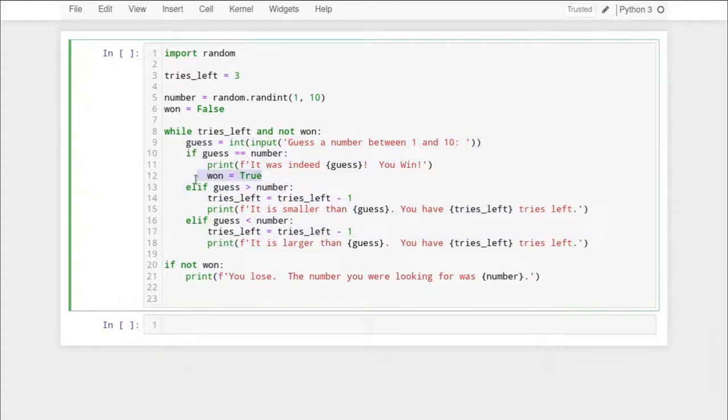We start a while loop and just say, well, as long as we have tries left and we haven't won, we're going to take a guess, check if that guess is the number. If it is, we set won to true. If it's not, we tell the player whether their guess was too high or too low.